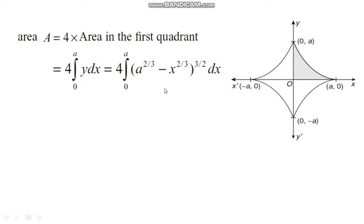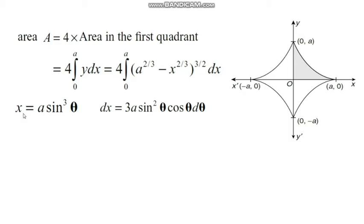The required substitution is x = a·sin³θ. To convert the definite integral in terms of θ, differentiate x = a·sin³θ with respect to θ. This gives dx = a · 3sin²θ · cosθ dθ, so dx = 3a·sin²θ·cosθ dθ.